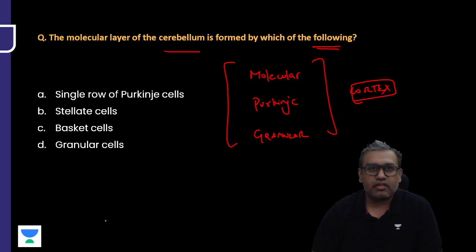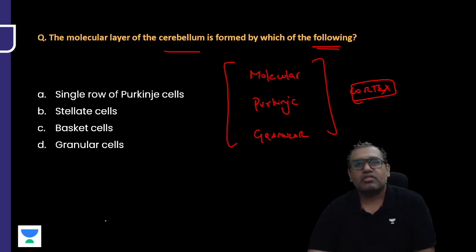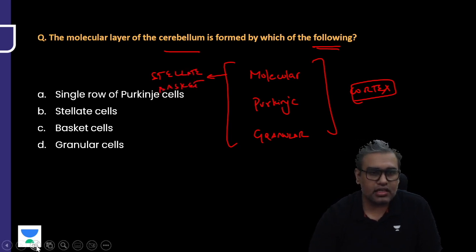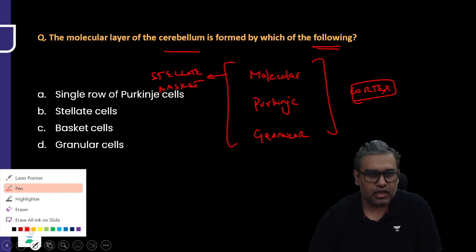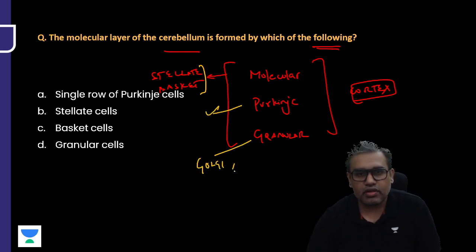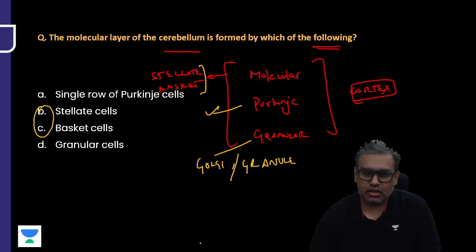Cerebellum as a topic is very important. We should know the various pathways. There are five or six types of cells. The molecular layer main cells present are mainly the stellate and the basket cells. Stellate and basket in the molecular, Purkinje has Purkinje cells, and granular will have granular cells as well as Golgi cells. In these options, B and C would be good choices.